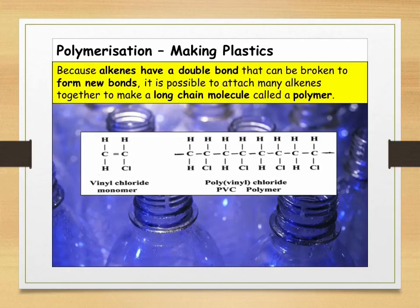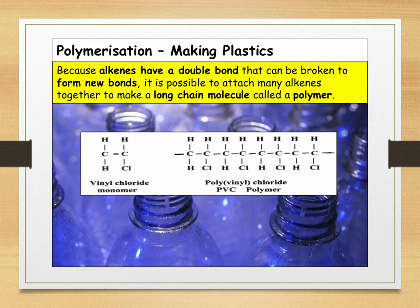The final alkene reaction that you need to know for GCSE is polymerization. Because alkenes have a double bond, they can be broken to form new bonds. Therefore, we can attach many alkenes together to make a long chain molecule called a polymer. We will look at polymers in much more depth in the next video, where we will look at both addition and condensation polymers.